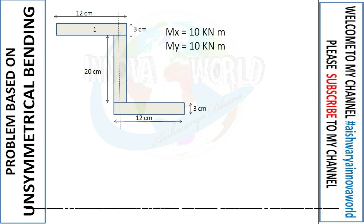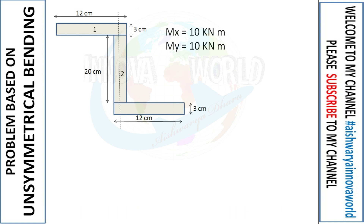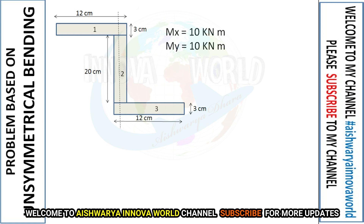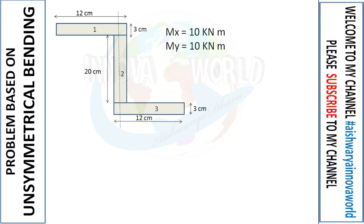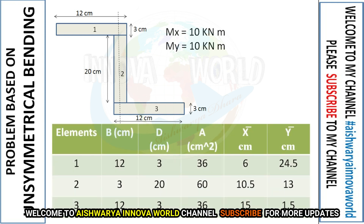We will split the section into sections 1, 2, and 3. After splitting, we form a table listing the breadth, depth, area, and centroid for each element.